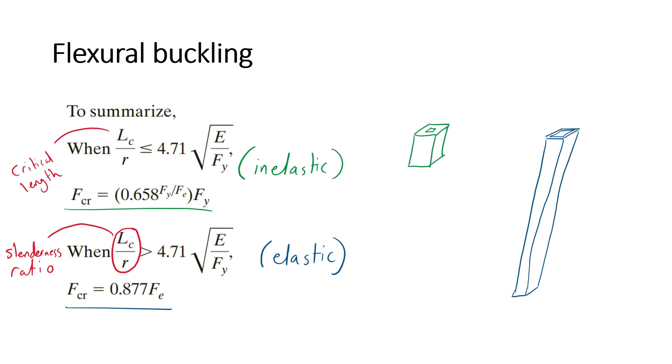To summarize the equations, whenever the slenderness ratio is less than or equal to the term on the right-hand side, where E is the elastic modulus and Fy is the yield strength, then the column is inelastic. And if it is greater, then the column is elastic.